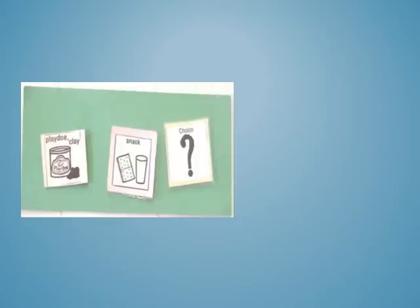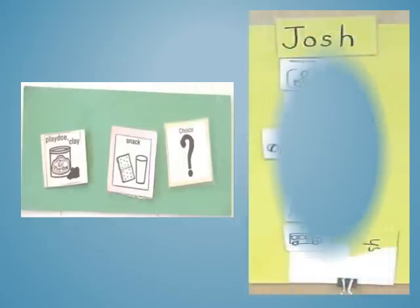After snack time is over, you show the visual schedule to the learner, have them remove the snack picture, and say snack time is over — now you get to make a choice. As you remove pictures, it tells the learner what's over, what's coming next, and with the number of pictures remaining, it also helps them understand how much time is left for the visual schedule.